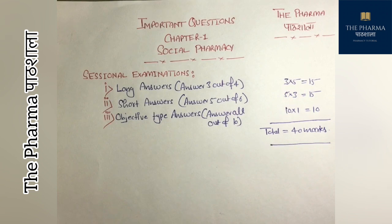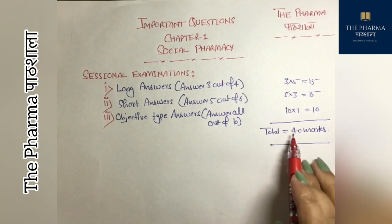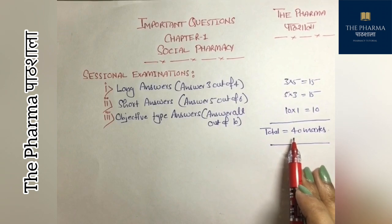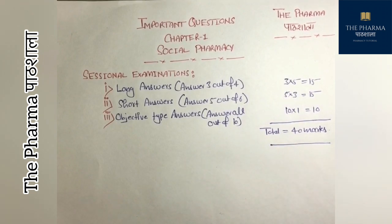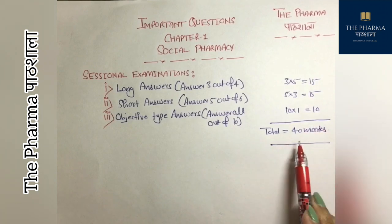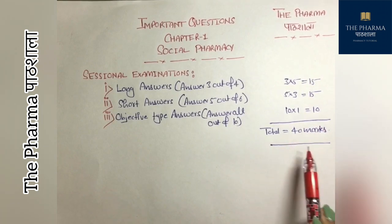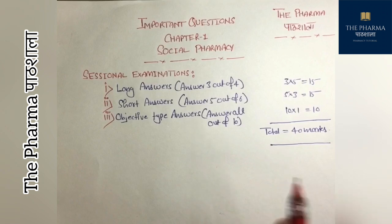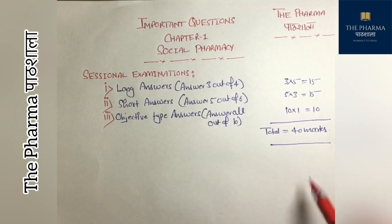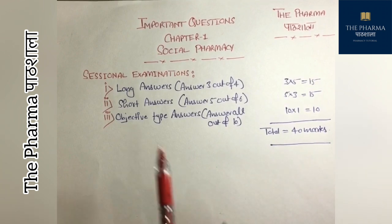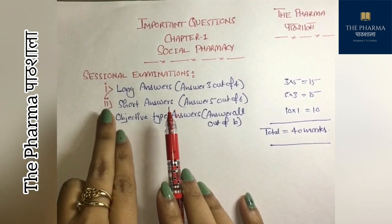The sessional exam is a total of 40 marks. The number of sessionals conducted depends on the university. The total marks are 40, and the last exam is divided into 20 marks, then the average is taken. The final marks come to 20 marks. The sessional exam is prepared by students.